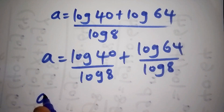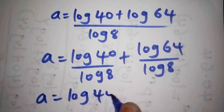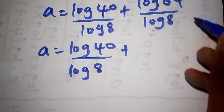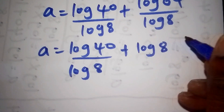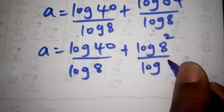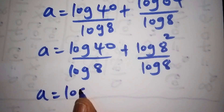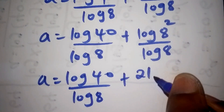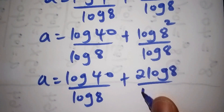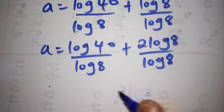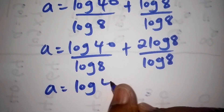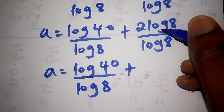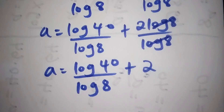Now, log of 64 can also be written as log of 8 to the power of 2, which becomes 2 times log 8, all over log 8. So log 8 and log 8 cancel, leaving plus 2. So A equals log 40 over log 8, plus 2.